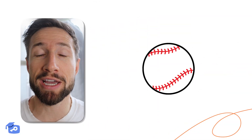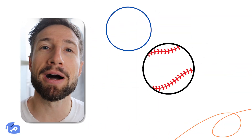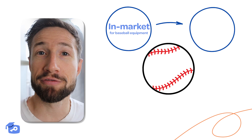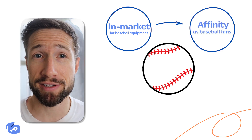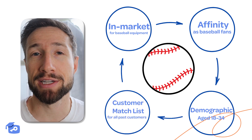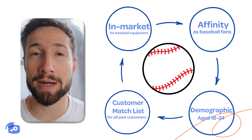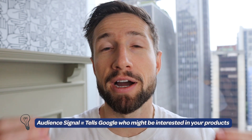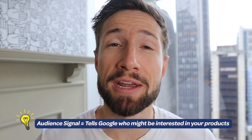If you are selling baseball mitts, the following audience segments would make sense: in-market for baseball equipment, affinity as baseball fans, demographic age 18 to 34, and a customer match list of all your past customers. Together, these segments create an audience signal that basically says to Google: these are the kinds of people who might be interested in what I'm offering. The AI then finds and targets similar audiences to show your ads to.